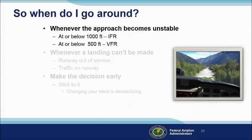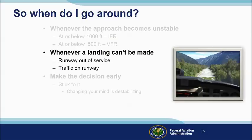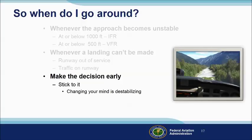When do you go around? If you're at or below 1,000 feet IFR, or 500 feet VFR, and the approach isn't stable, it's time to miss the approach or go around. Likewise, if the runway is out of service or there's traffic on it that won't be clear when you get there, go around. Whatever the situation, the earlier you make the go-around decision the easier it will be, and once you've decided, stick to that decision. Changing your mind after starting the maneuver is destabilizing, and you're too close to the ground for that.